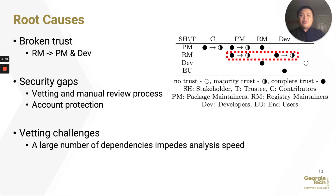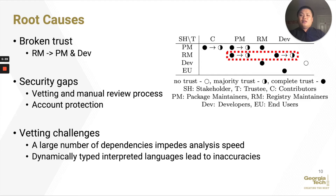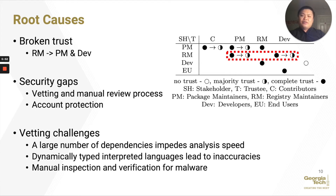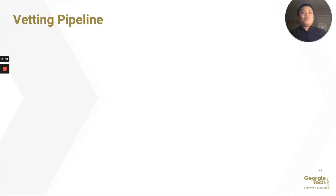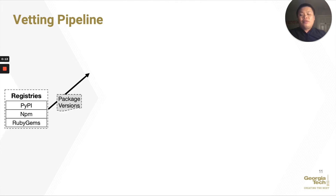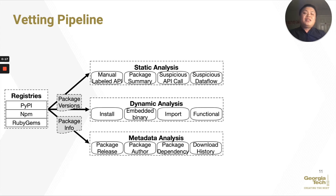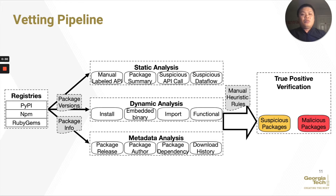We noticed that the large number of dependencies used by packages impedes analysis speed. Also, these packages are written in dynamically typed interpreting languages, which can lead to inaccuracy if you only perform static analysis. So whenever you claim something is malware, you have to manually inspect and verify. To this end, we propose an analysis pipeline that performs vetting analysis — a prototype that can be adopted by registry maintainers and also a tool to identify new malware. We perform static analysis, dynamic analysis, and metadata analysis. We derive a set of heuristic rules from inspecting known malware to identify suspicious packages, then manually review the results to identify malicious ones and update the rules.